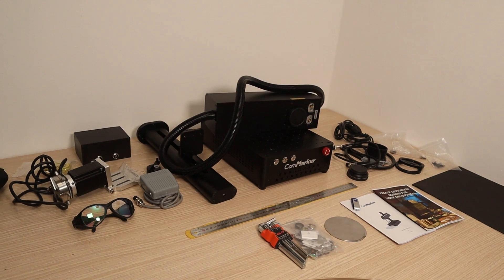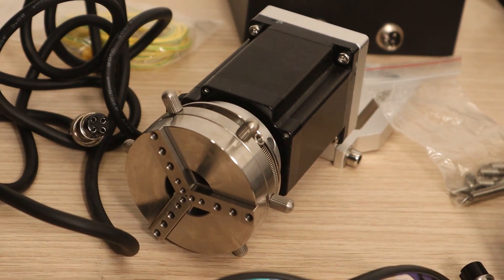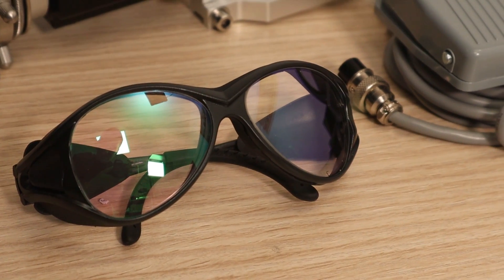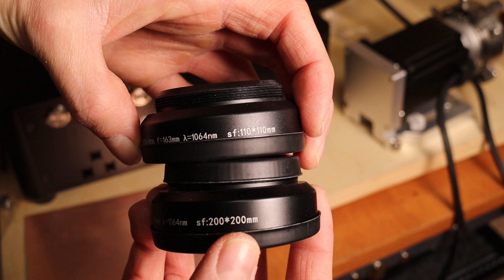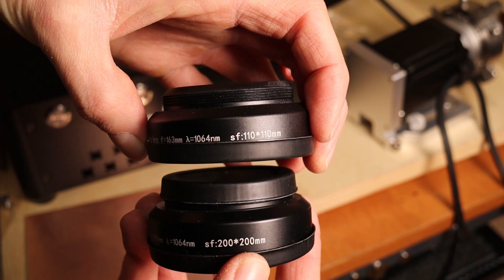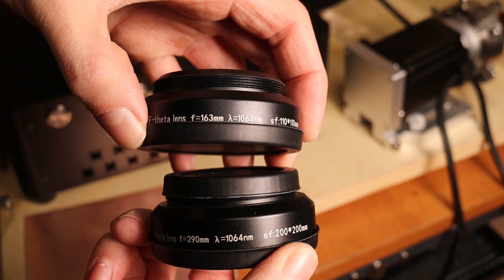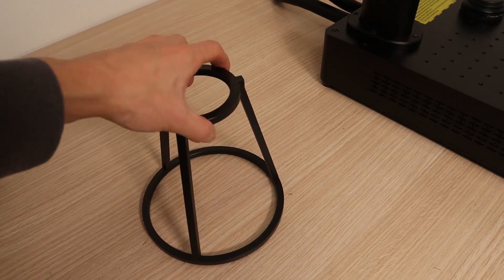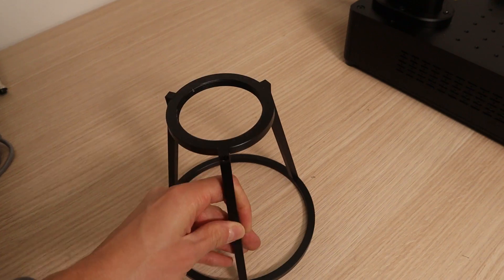You get a lot of stuff with this laser, including a very high quality rotary chuck and better laser safety goggles, a foot switch and two lenses. One lens for smaller and more precise engravings and one for larger ones. You also get a solidly built distance frame for handheld operation.